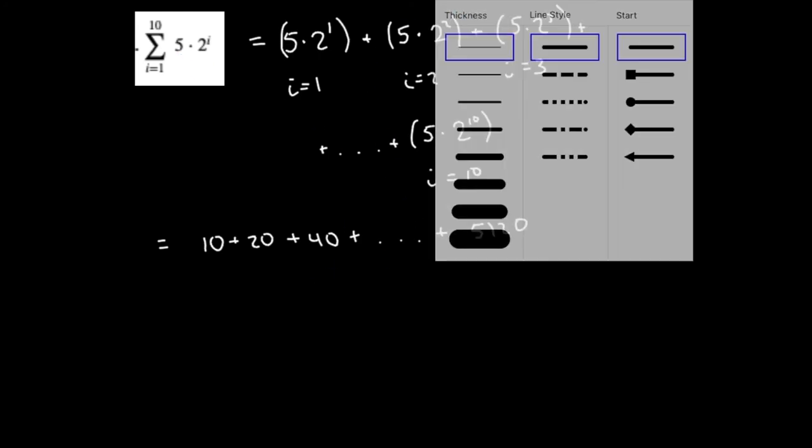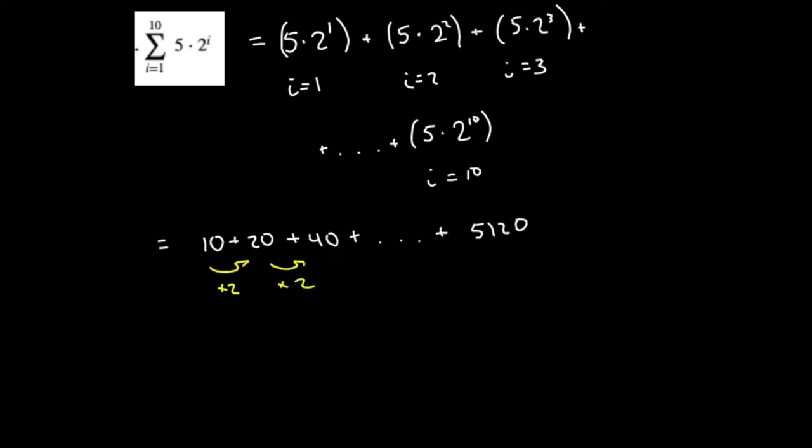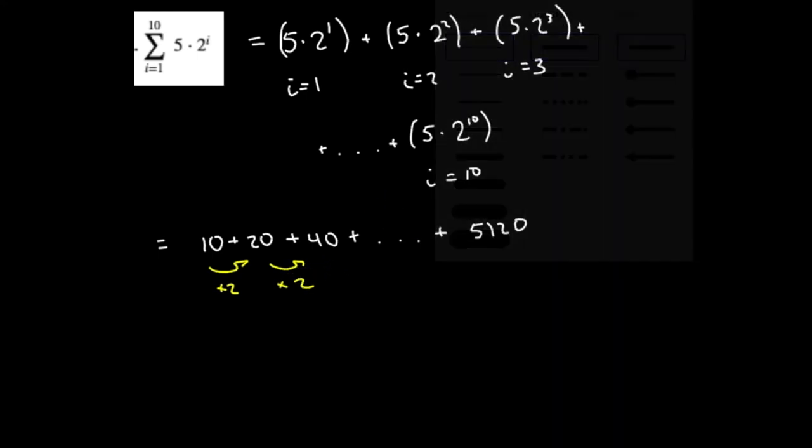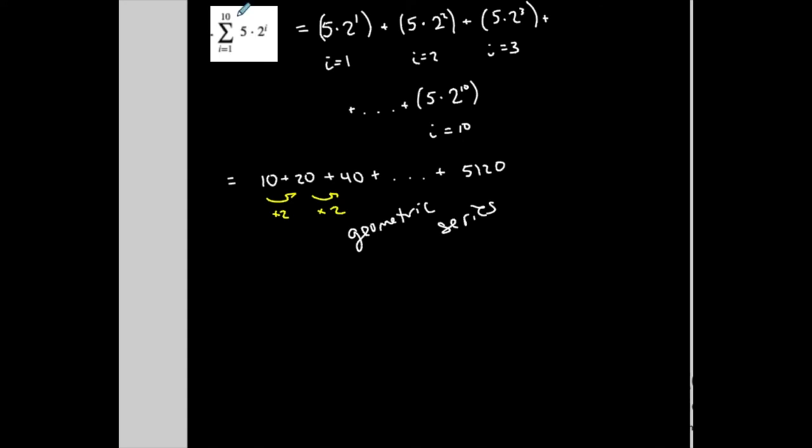Now, what I could do is write out all 10 terms and then add them up. Or I can say, well, look at this pattern. Each term is getting multiplied by 2 to get to the next one. So that means that it's geometric, it's a geometric series. Not every situation is going to be geometric or arithmetic, but we're practicing them for now. If it's not, then I might have to actually do the first 10 terms and add them all up. But this is geometric. And what that means is, I want the sum of the first 10 terms of this particular geometric series.